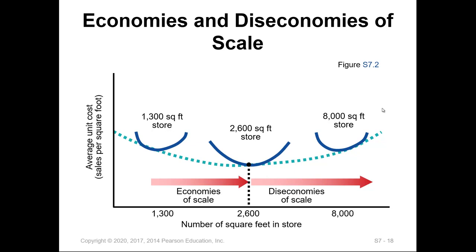Having a large space is not always the solution. Large space might increase the average unit cost, and small space might also increase the average unit cost. An optimum can be calculated to get the minimum average cost per unit by utilizing the right square footage. The chart shows that 8,000 square feet was too large and 1,300 square feet was not enough, so 2,600 square feet was calculated as the optimal space for lowest cost.